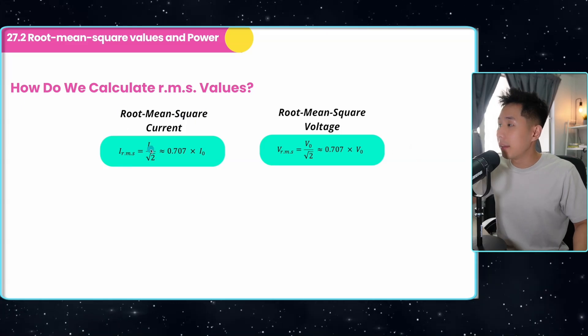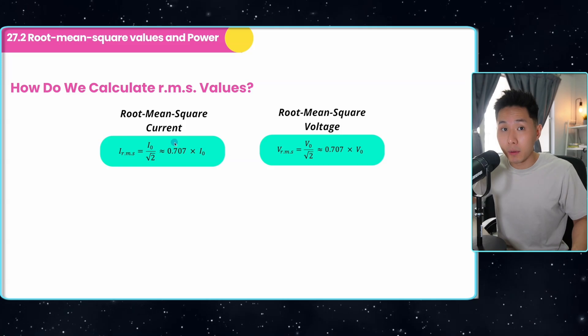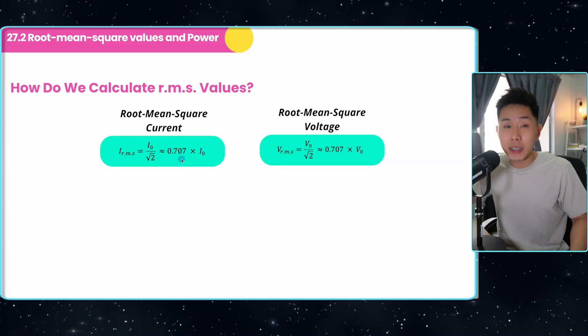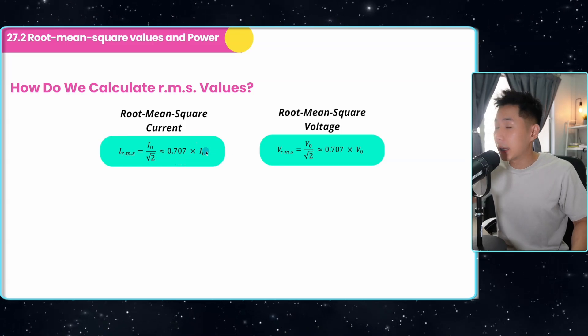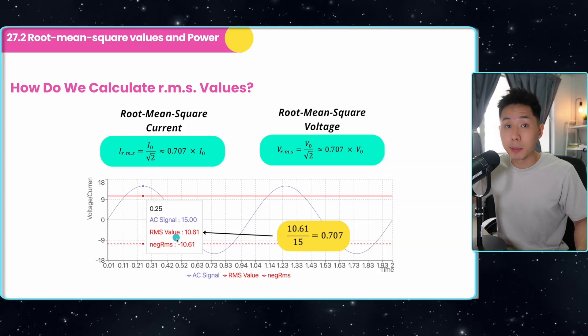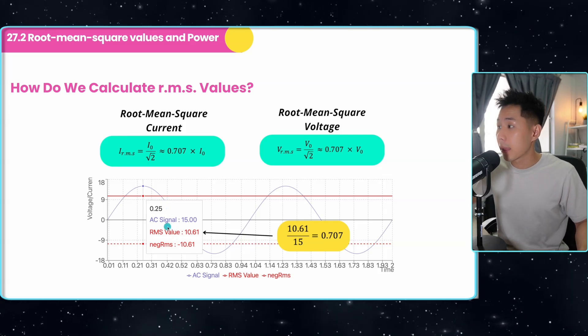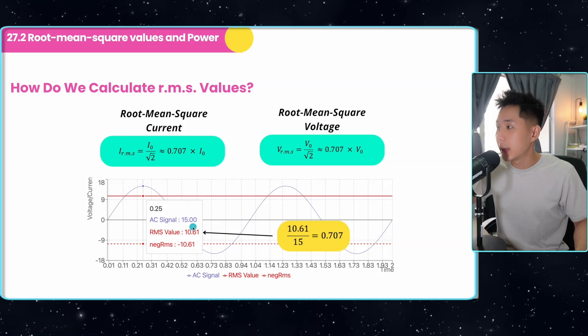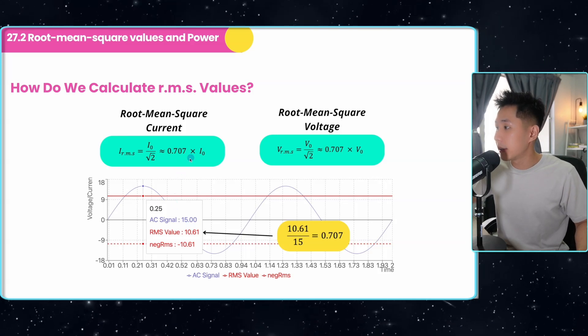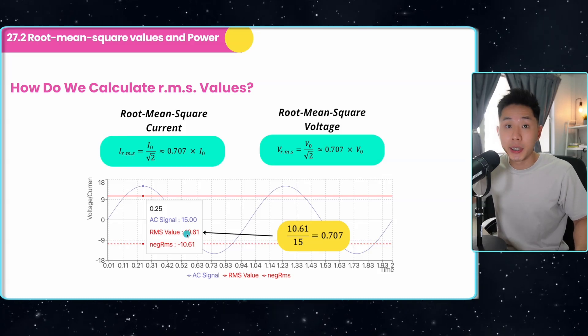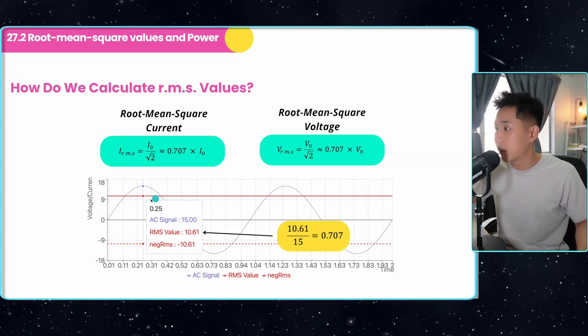That's when we have this equation. If you want to calculate the root mean square current or voltage, you can use this equation, which is around 70% of the peak current or voltage. So I have this graph to illustrate to you the difference between root mean square value and AC. So in this case, the peak current is 15 ampere. So if you were to plug in the equation here, you will find out that the root mean square value is 10.61, which is around this value here.